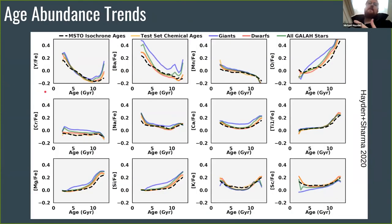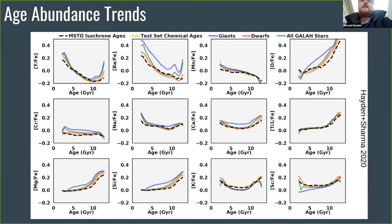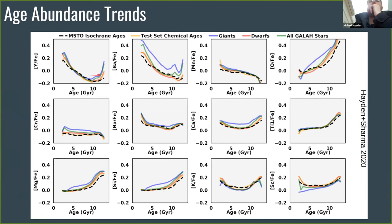As a sanity check, we're now expanding ages not just to turnoff stars but the whole GALAH dataset — dwarfs, giants, the whole HR diagram. In the ideal case, age-abundance trends should all lie on top of each other since they come from the same training model, and for the most part that's true — except for yttrium and barium, where giants show a strong deviation. Yttrium and barium may be problematic for giants and could impact age estimates.